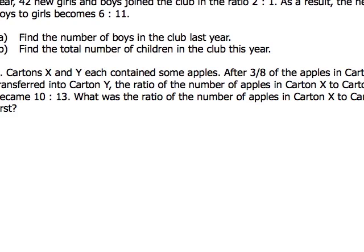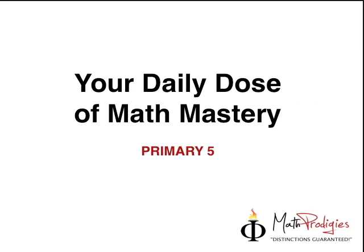Okay, so let's read the question. It says, cartons X and Y each contain some apples. Now, after 3/8 of the apples in carton X were transferred into carton Y, the ratio of the number of apples in carton X to carton Y became 10 is to 13. The question is, what was the ratio of the number of apples in carton X to carton Y at first? Wow, looks pretty challenging to me.